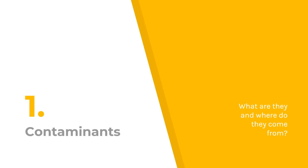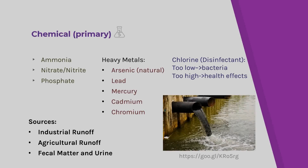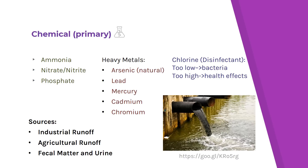First, we want to look at the main contaminants found in water sources — what are these contaminants and where do they come from? There are three main types of contaminants that we will cover. The first are the primary contaminants. The EPA has established national primary drinking water regulations, which set mandatory water quality standards for drinking water contaminants — these are enforceable standards in the United States that pose a risk to human health.